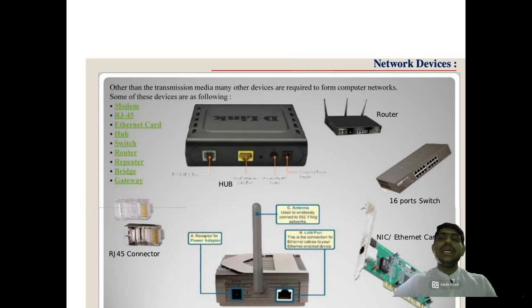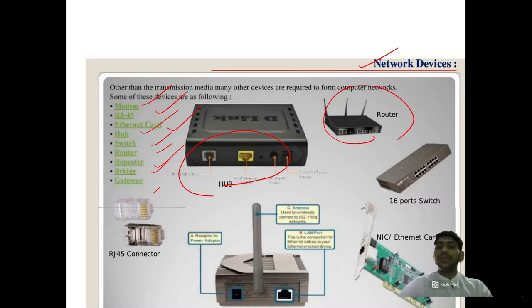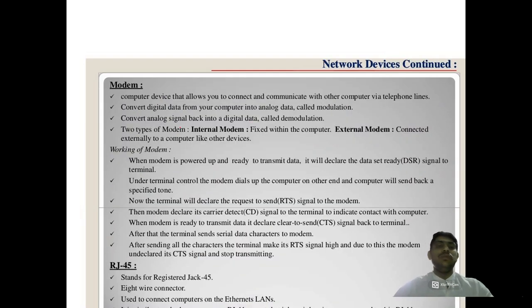These are the different network devices: modem, RJ45 connector, Ethernet card, hub, switch, router, repeater, bridge, and gateway. You can see images of the hub, router, switch, NIC card, RJ45 connector, and repeater.